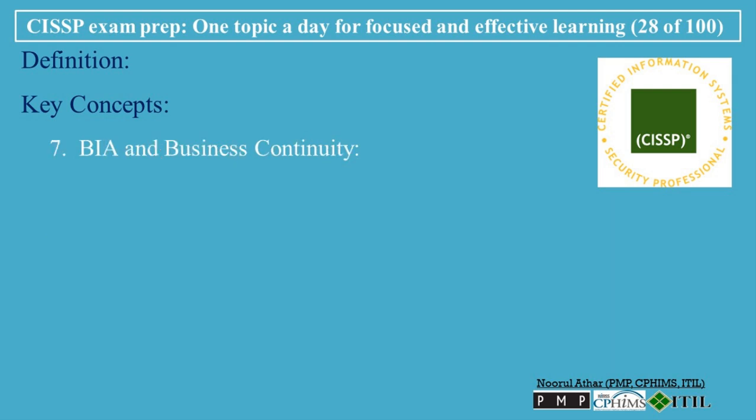BIA and Business Continuity: The BIA is a crucial foundation for Business Continuity Planning, BCP, and Disaster Recovery Planning, DRP. It identifies which business functions need continuity or recovery plans, how quickly they need to be restored, and what resources are required. The information gathered from the BIA is used to develop and implement strategies to maintain or quickly restore operations during and after a disruption.